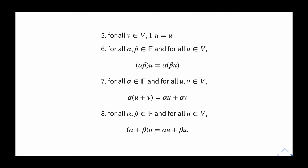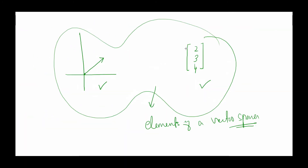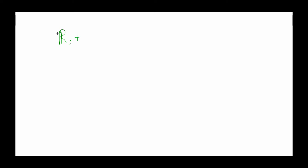If all eight properties are satisfied for a set V associated with field F under binary operation + and scalar multiplication, we say V is a vector space over field F. One obvious example is the set of all real numbers ℝ — addition of two real numbers is well defined, and the scalar multiplication is the usual multiplication of real numbers over the field ℝ itself. This forms a vector space.